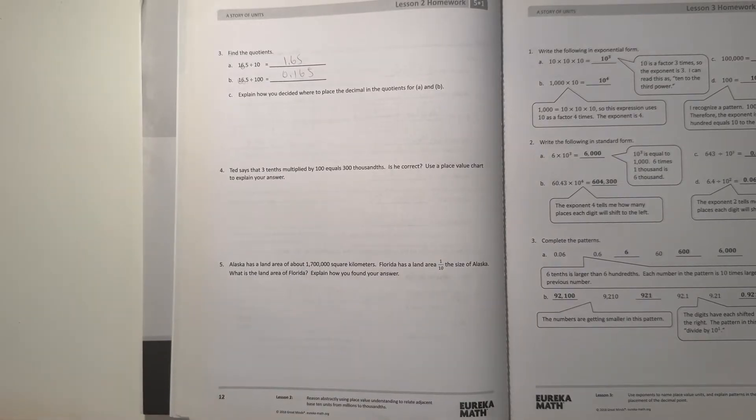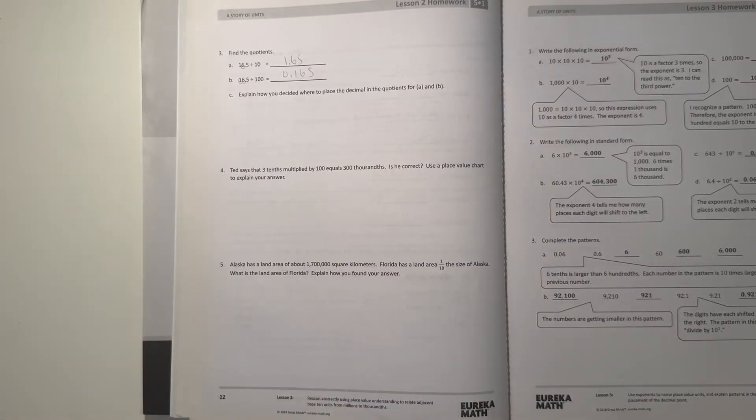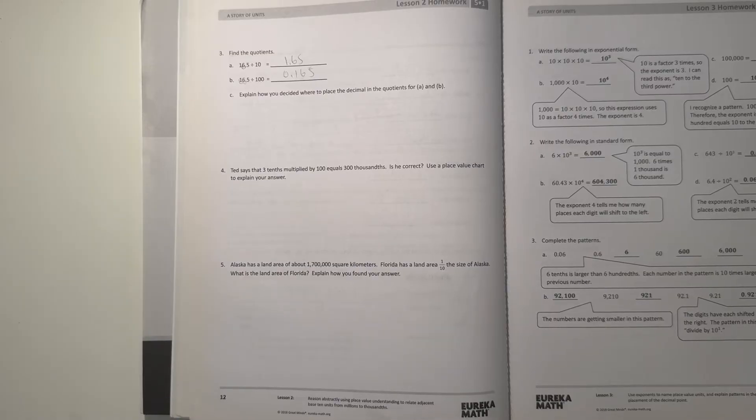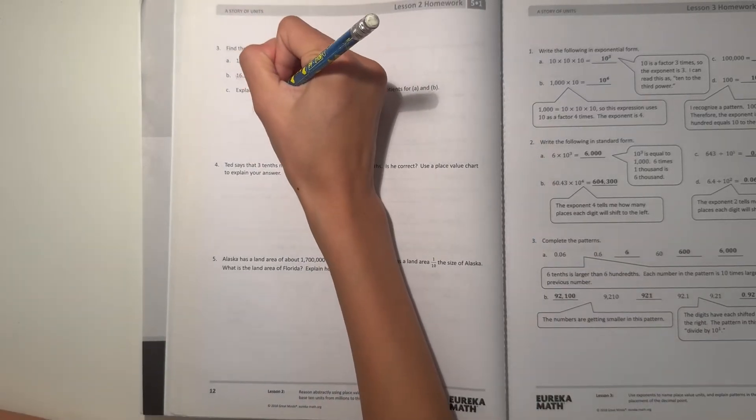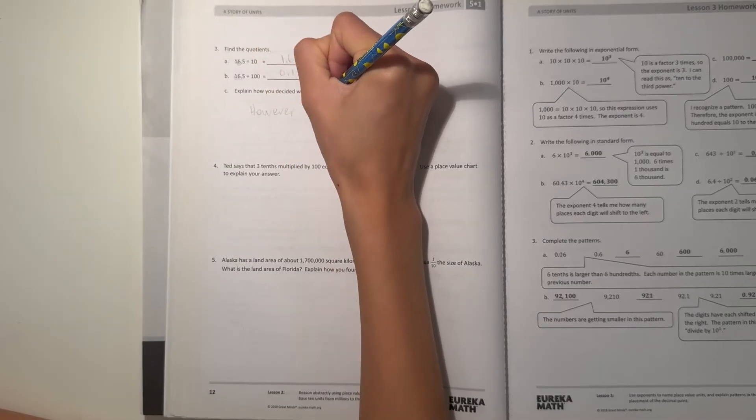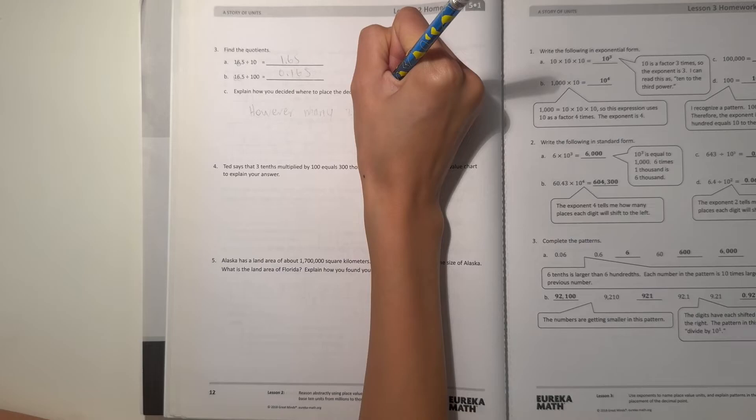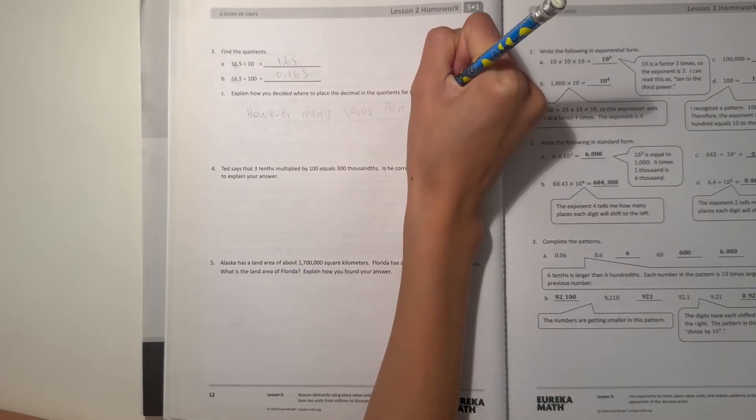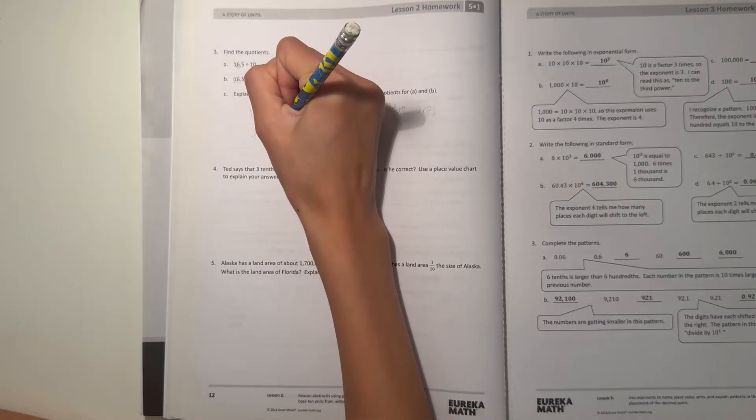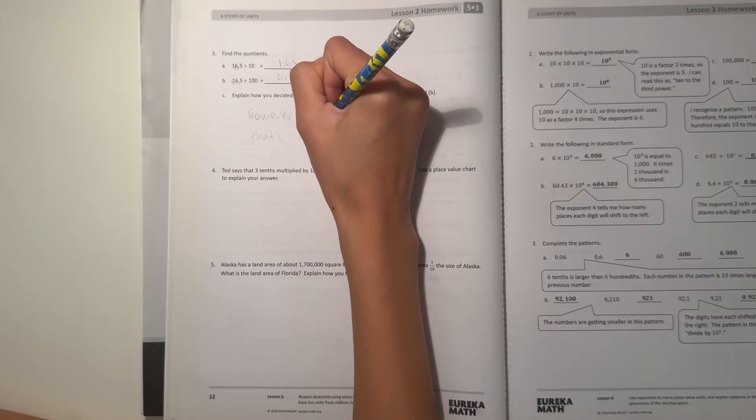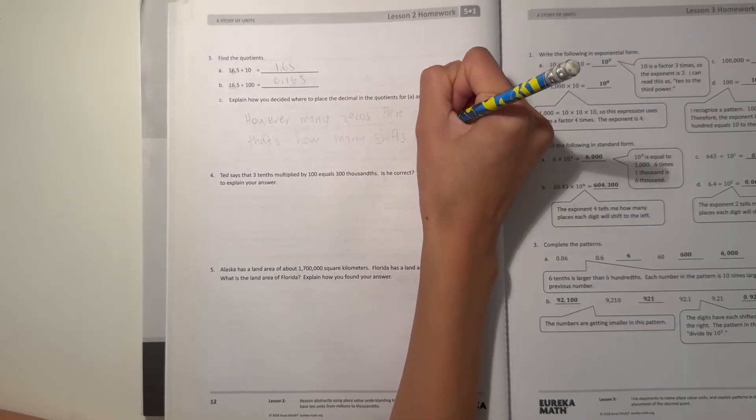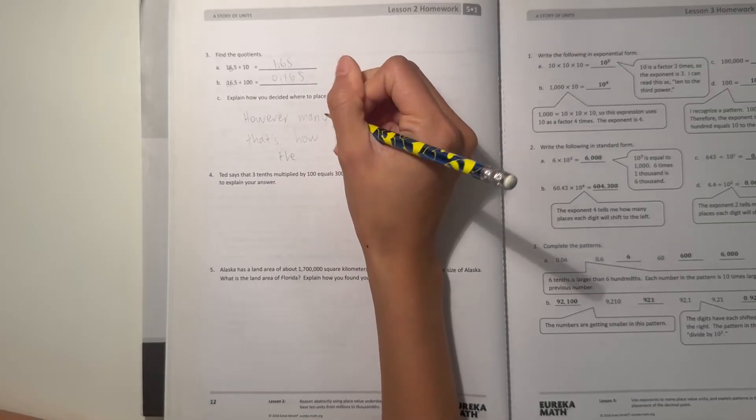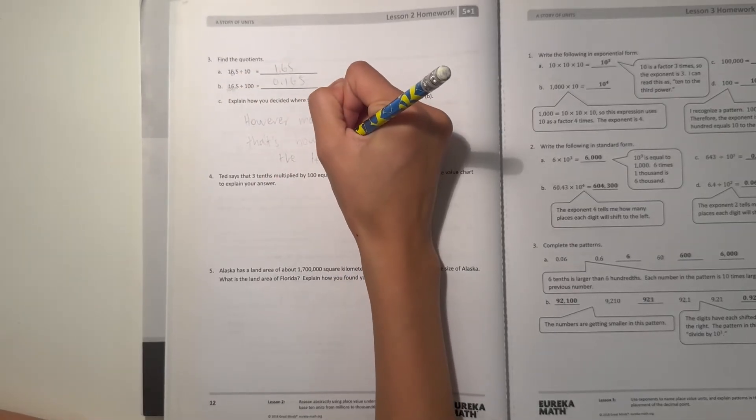Now it says, explain how you decided where to place the decimal in the quotients for A and B. Well, however many 0s there are, that's how many shifts we're going to shift the decimal in place. So we can write, however many 0s there are, that's how many shifts to the left, because we're moving the decimal point to the left.